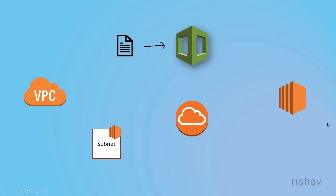We will also define routing tables and routes, and then deploy and launch an EC2 instance where we can SSH in and deploy our applications. These are the resources from AWS we will use with CloudFormation.